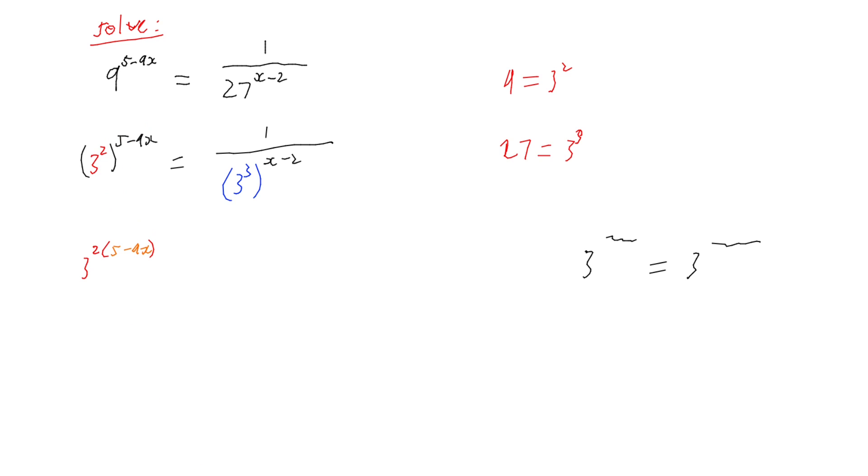And I can do the same on my right. I've got 1 over and I've got 3 to the 3 times x minus 2. So that's given us now almost what we wanted.